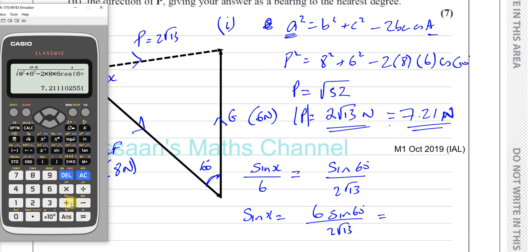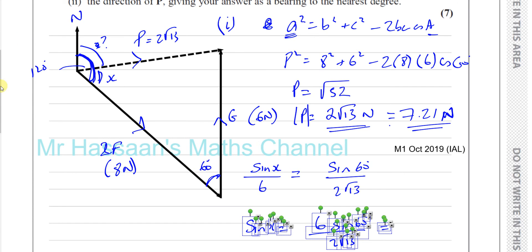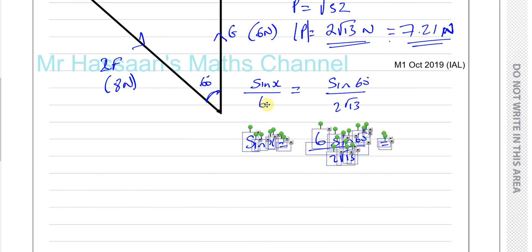Okay, so we take, so let's do 6, 6 times sine 60 divided by the last answer, which was 2 root 13. Okay, that's going to give me, that's not going to give me the angle, that's going to be the sine of the angle.